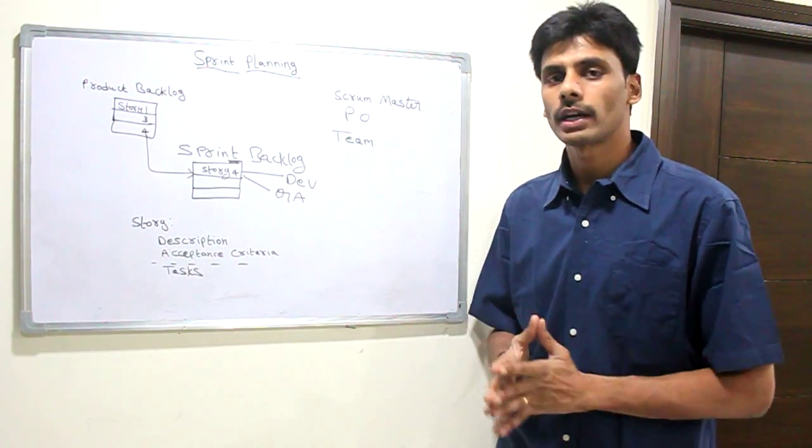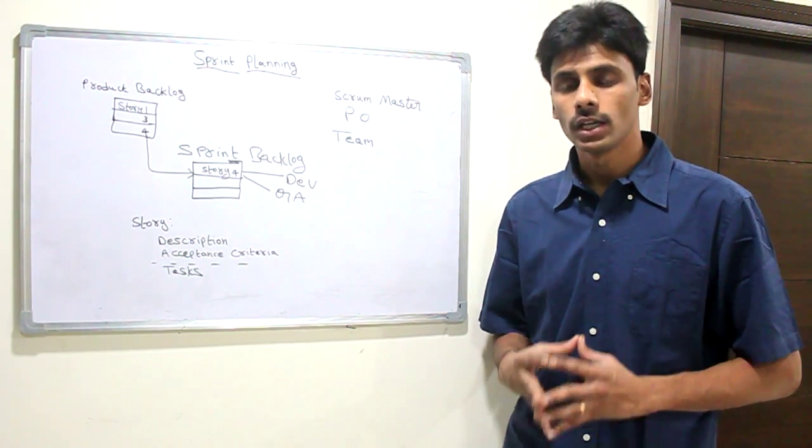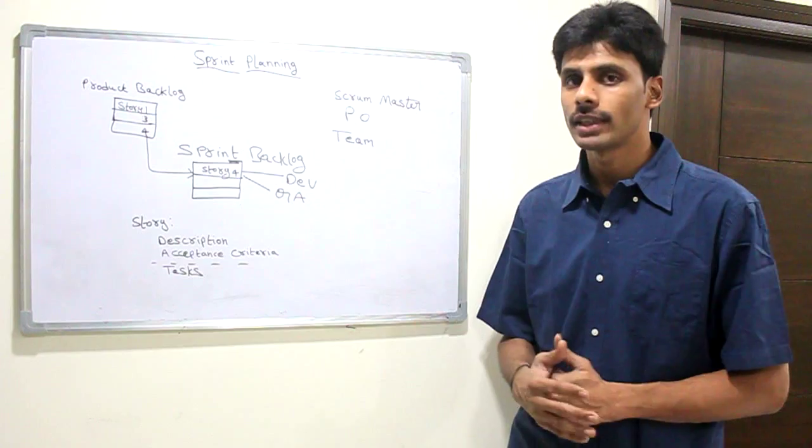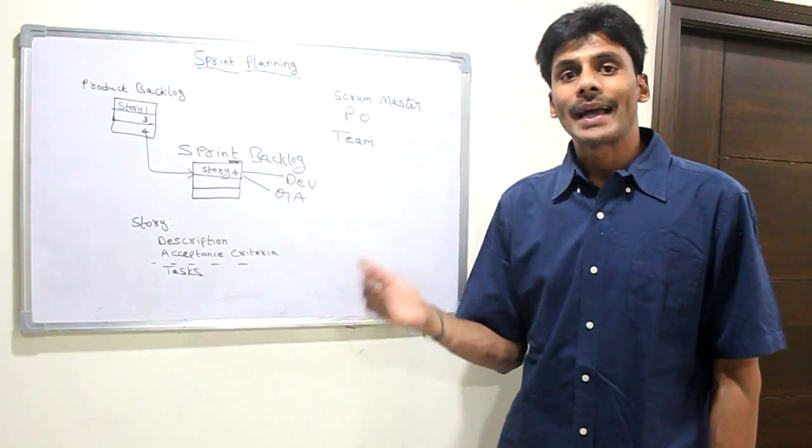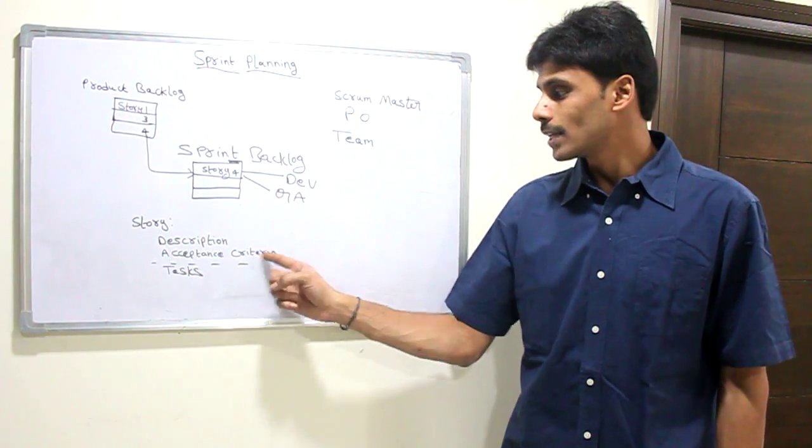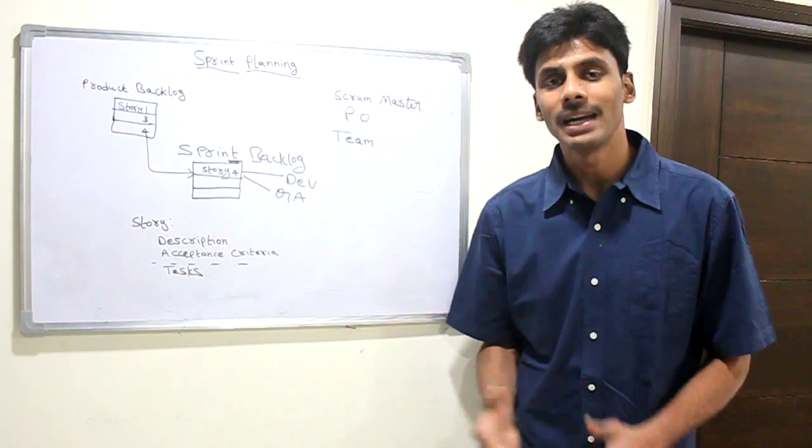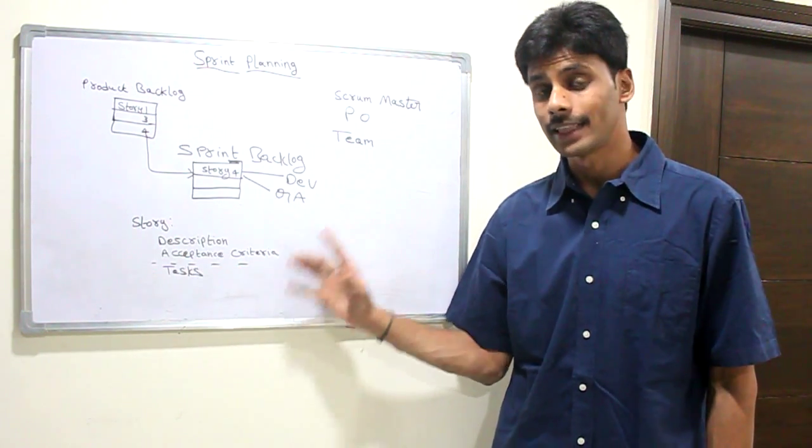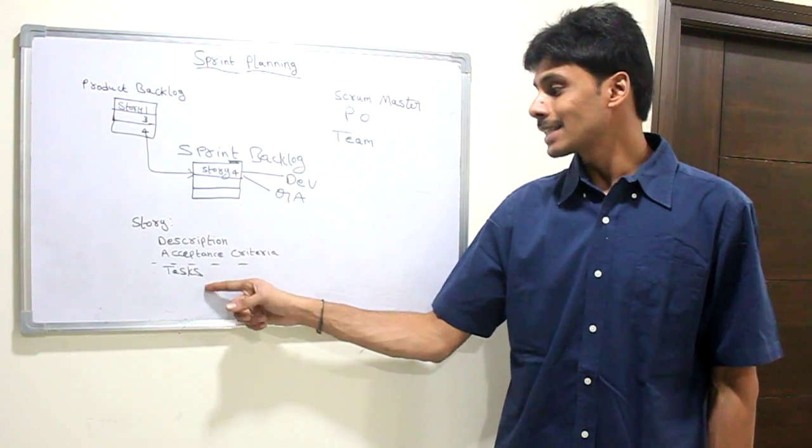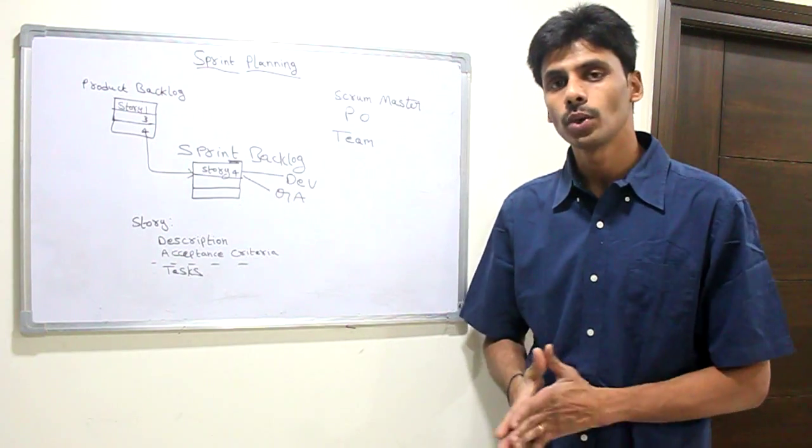Acceptance criteria is usually defined by the product owner, but we as a team can help them come up with the best acceptance criteria. The QA is very helpful there—they can come up with suggestions on what the acceptance criteria should be. QA is going to test the story against the acceptance criteria, and when they build their test cases, they're going to base them on the acceptance criteria in the story.